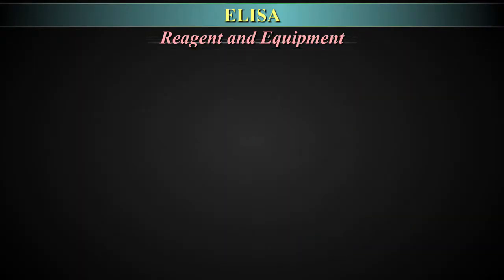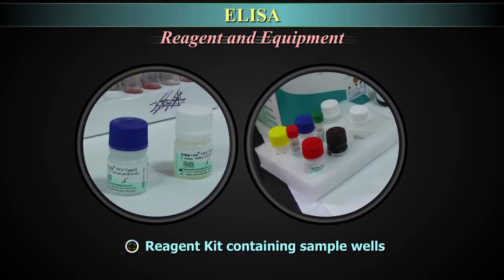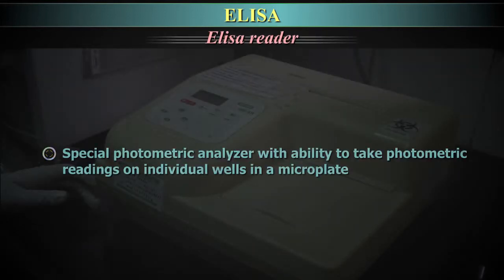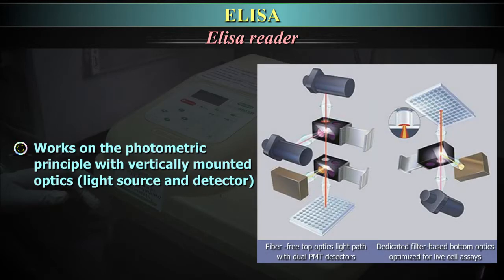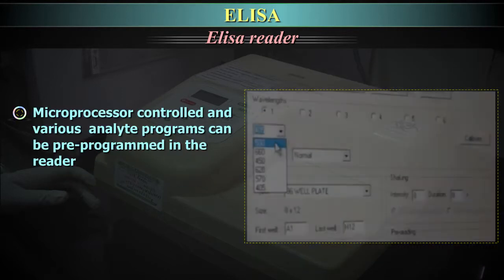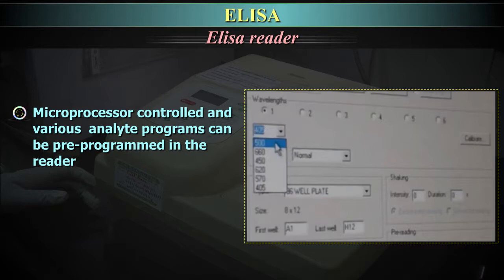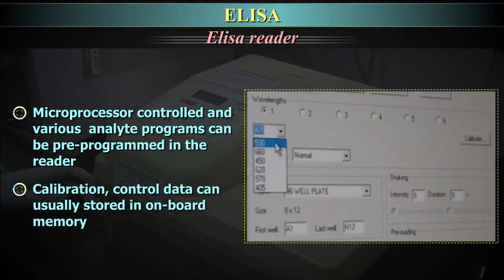Reagents and equipment required: ELISA reader, ELISA washer, pipette (multi-channel or single-channel), incubator, and reagent kit containing sample wells. ELISA readers are special photometric analyzers with the ability to take photometric readings on individual wells in a microplate. They work on the photometric principle with vertically mounted optics, light source and detector. Similar to a photometer, ELISA readers are microprocessor controlled and various analyte programs can be pre-programmed in the reader. Calibration control data can usually be stored in on-board memory.